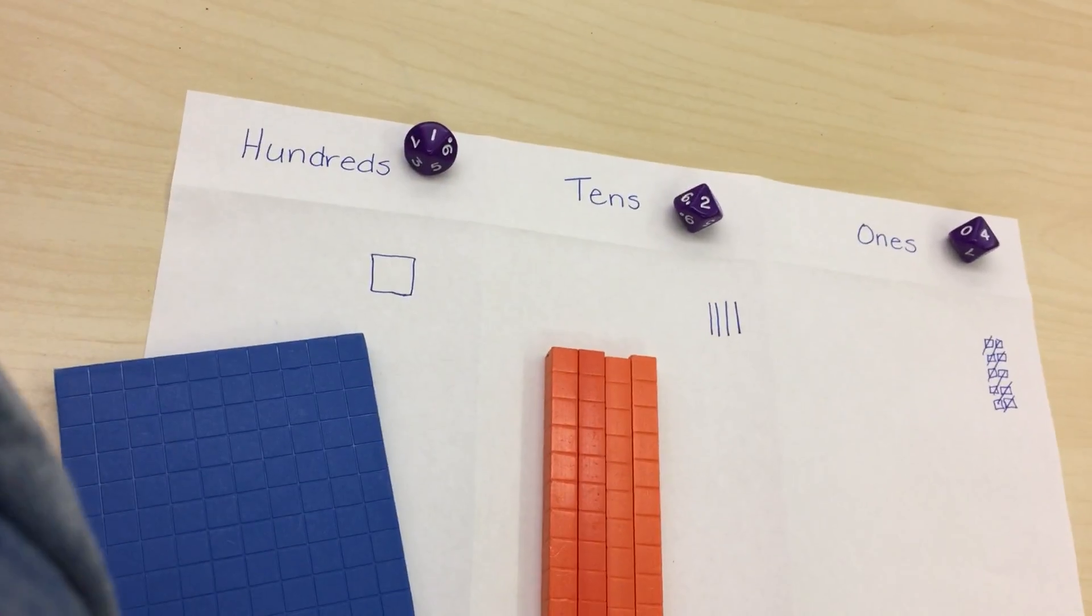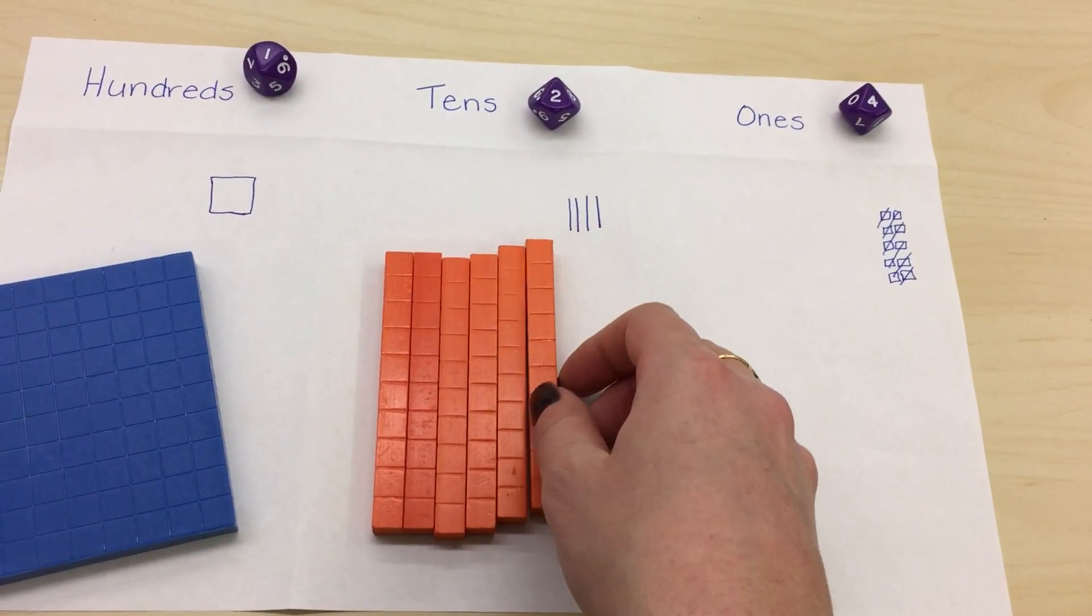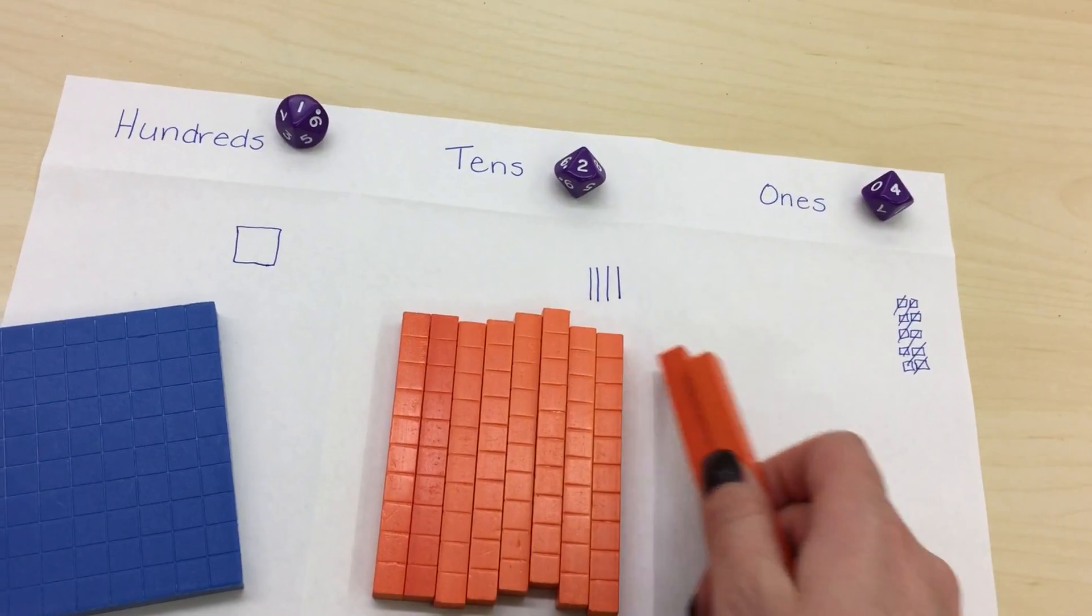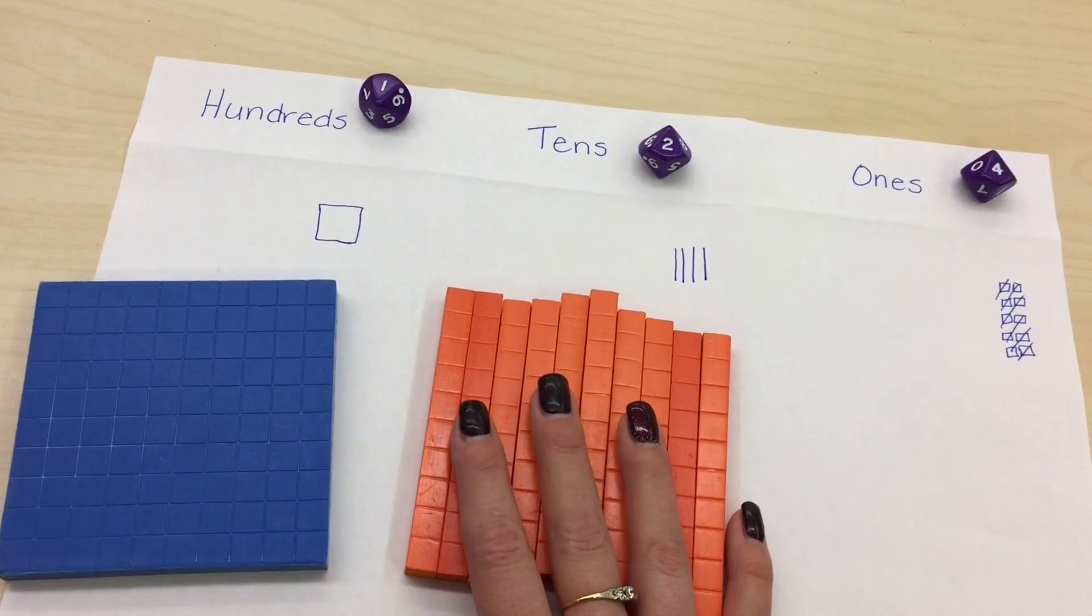If I kept adding tens, I would then have one hundred fifty, sixty, seventy, eighty, ninety. Now I have one hundred, one hundred.